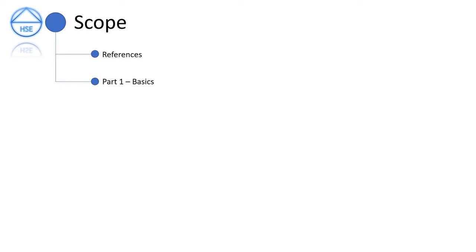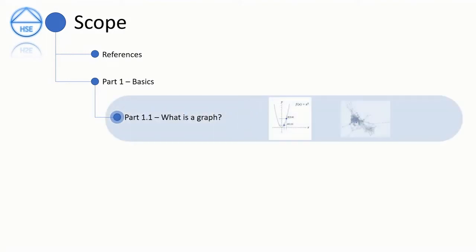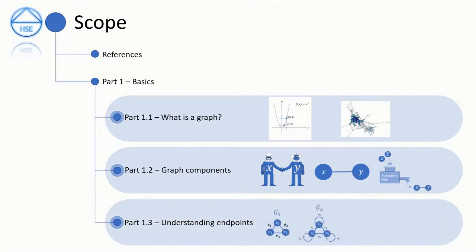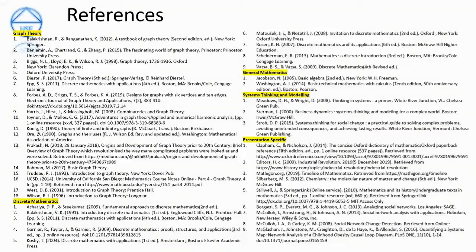Part 1 is broken down into three parts. In Part 1.1 we cover what a graph is and what it is not. In Part 1.2 we cover the components of a graph. In Part 1.3 we cover a rationalisation of endpoints I have developed to explain the limitations of applications of certain concepts. There are about 41 references cited throughout this presentation, principally because graph theory is grounded in mathematics — a language that gives you a way to express the relationships you see every day.